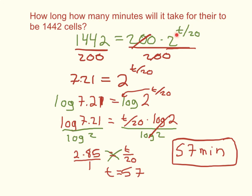We could have guessed and checked different values of t, but the more efficient way is to first isolate the exponential term, then take the logarithm of both sides. This brings the exponent down, which contains the variable we want to isolate. We divided both sides by log of 2, which simplified to 2.85, then cross-multiplied to get t equals 57.